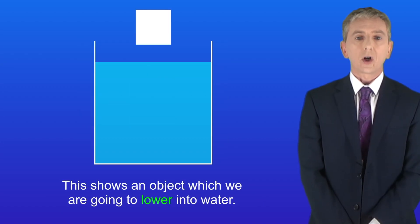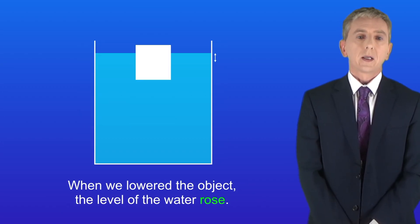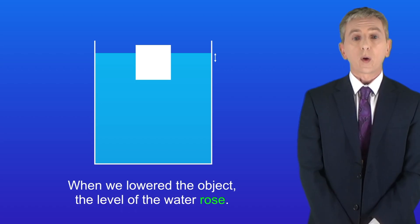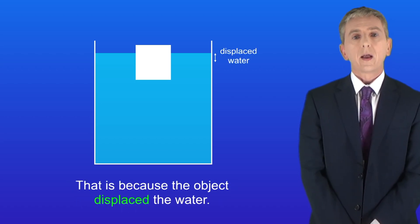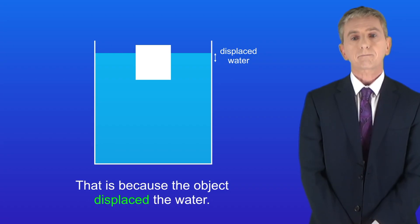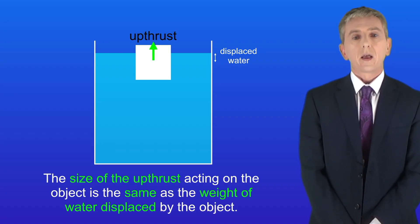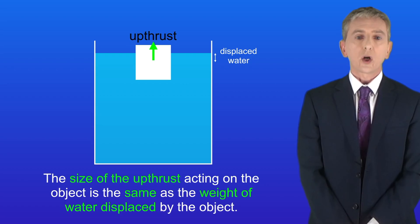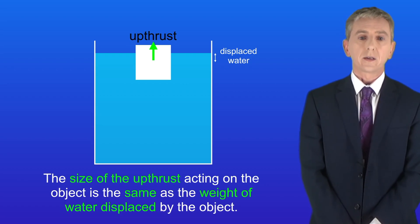I'm showing you here an object which we're going to lower into water. When we lower the object, the level of the water rises because the object displaced the water. Here's a key fact: the size of the upthrust acting on the object is the same as the weight of water displaced by the object.